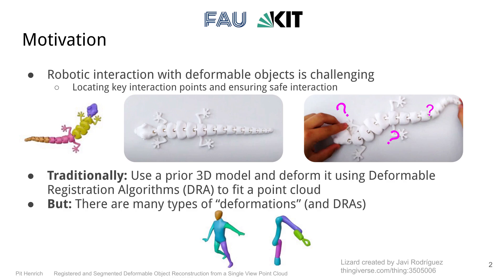Our motivation is that robotic interaction with deformable objects is challenging. Segments you might want to interact with are often only defined in a prior rigid model. As an example, say you want to robotically disassemble this 3D printed lizard into predefined segments. Finding these segments can be challenging if the lizard is wiggled about a little, especially on this model, since exploiting unique and clear visual landmarks is difficult due to the similarity of each body segment.